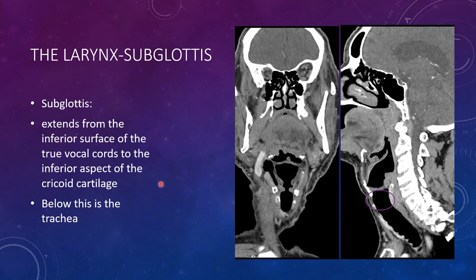The subglottic region is from the inferior surface of the vocal cords to the inferior aspect of the cricoid cartilage. Below this is the trachea. Usually this is not where you look for a primary lesion — you're looking for spread of a glottic cancer or lesion into the subglottic space, because that upstages it. This area from under the true vocal cords to the bottom of the cricoid cartilage is the subglottic region.